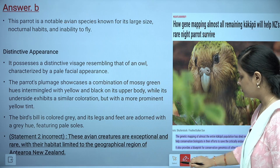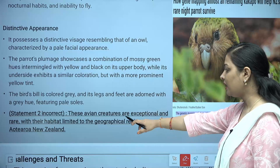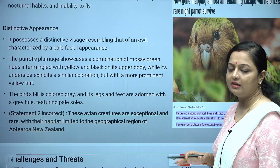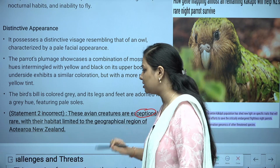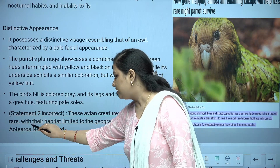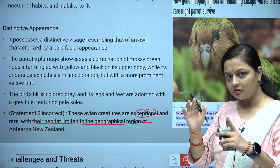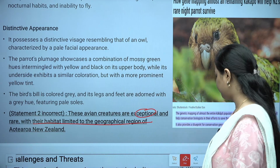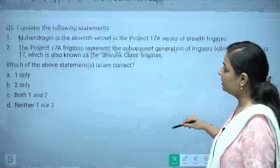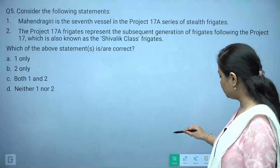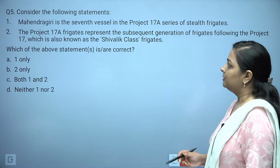The second statement is incorrect because the Kakapo's rare habitat is limited to the geographical region of New Zealand only — not Arunachal Pradesh. It is correctly classified under the critically endangered category of the IUCN Red List.